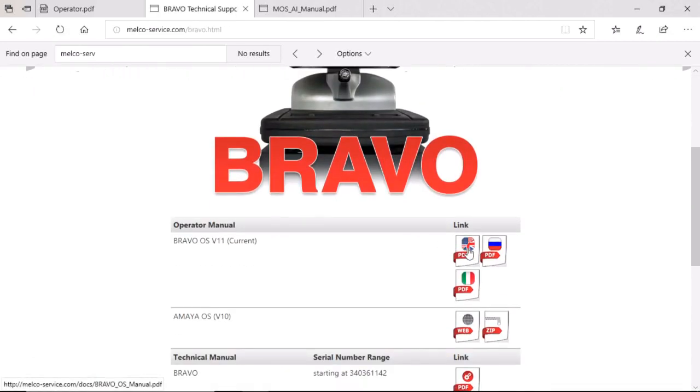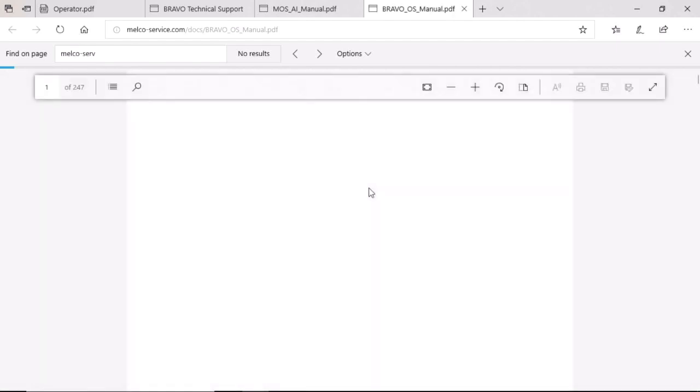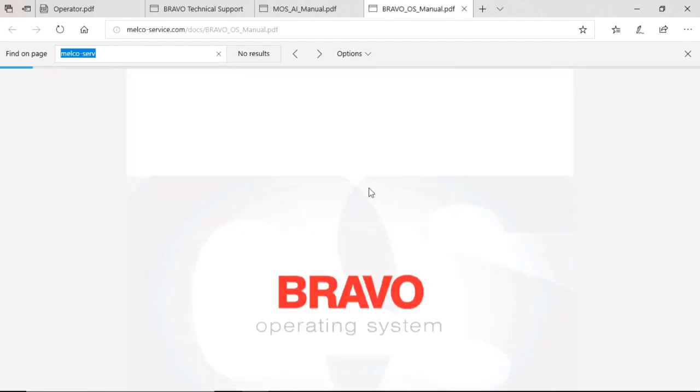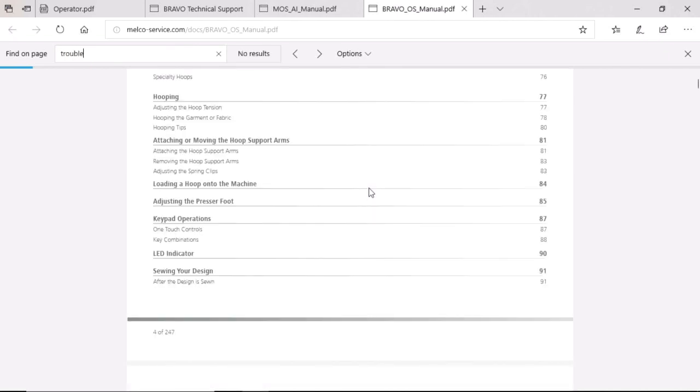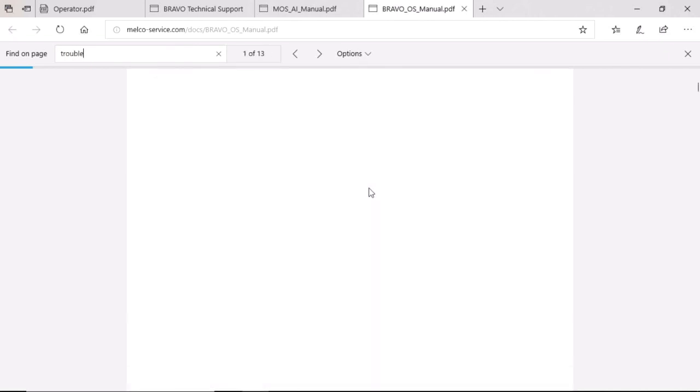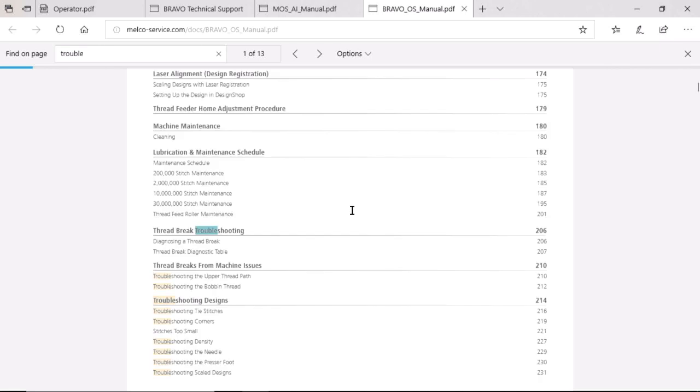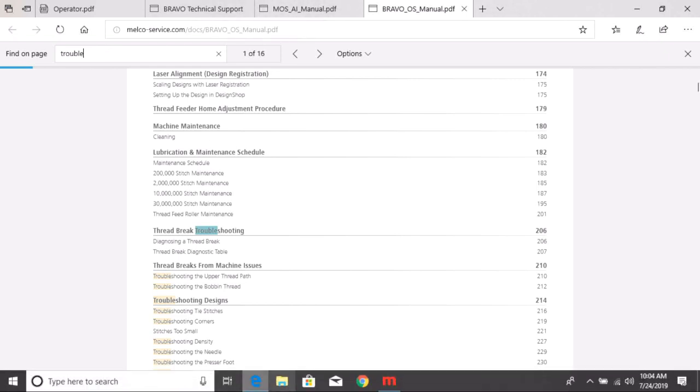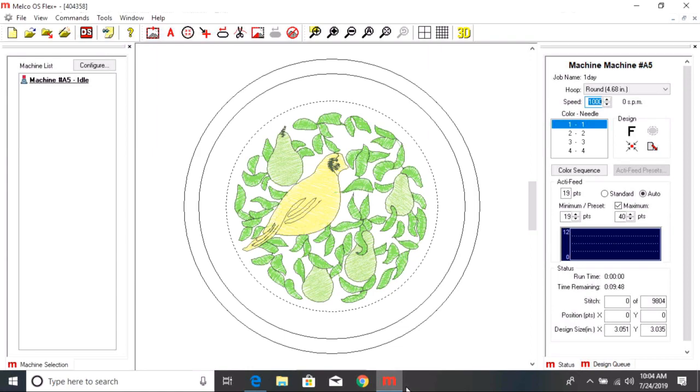So it is in the OS. It's in the operator's manual or I suppose we could go to melcoservice.com. And then I would go to either your machine and then it's going to be in the advanced. And this would be in the Bravo OS manual as well. I just control F trouble and there it is. Bravo and EMT 16 were good.